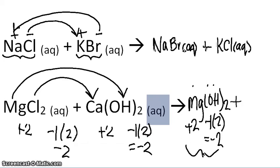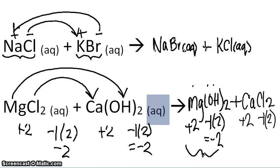We're also going to get calcium chloride, CaCl₂. Calcium has a plus two charge, and chlorine has a minus one charge, so we added two chlorines to get minus two — these charges balance as well. That's how you do a double displacement reaction. Hopefully that helps.